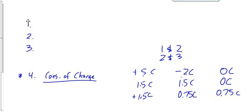Whenever I do something like this, I like to do a final check to make sure I haven't made a mistake. My check is to find the total charge in each step to make sure it remains the same. Plus 5, minus 2, and 0 gives plus 3. Then 1.5, 1.5, and 0 gives plus 3. Then 1.5, 0.75, and 0.75 gives plus 3. The total charge remains the same — that confirms the law of conservation of charge.